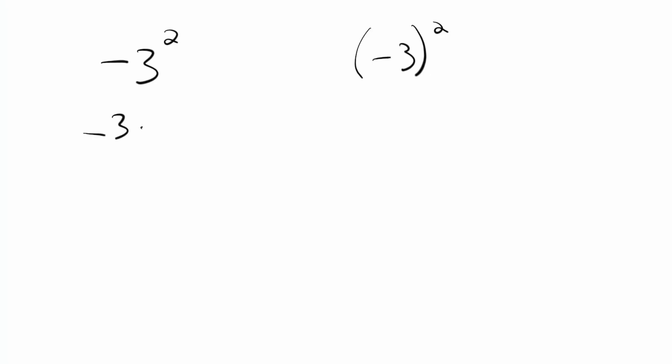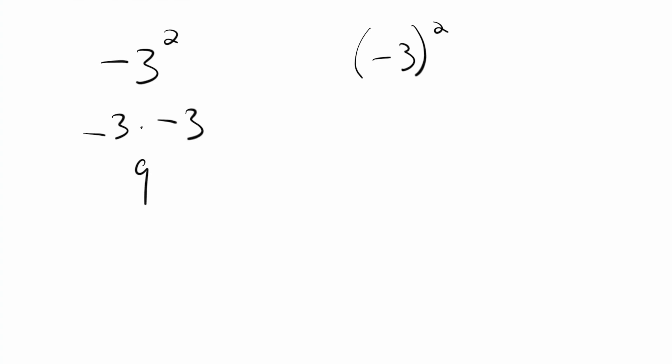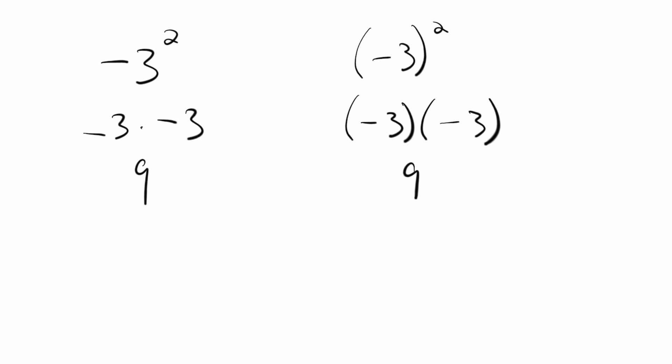What a lot of people see with the problem on the left is: negative three squared means negative three times negative three. A negative times a negative is a positive, and three times three is nine, so the answer is positive nine. Then they look at the right one — negative three squared — and get negative three times negative three again, so nine again. Which one is right and which one is wrong? The problem on the left is totally wrong. Let's talk about why.